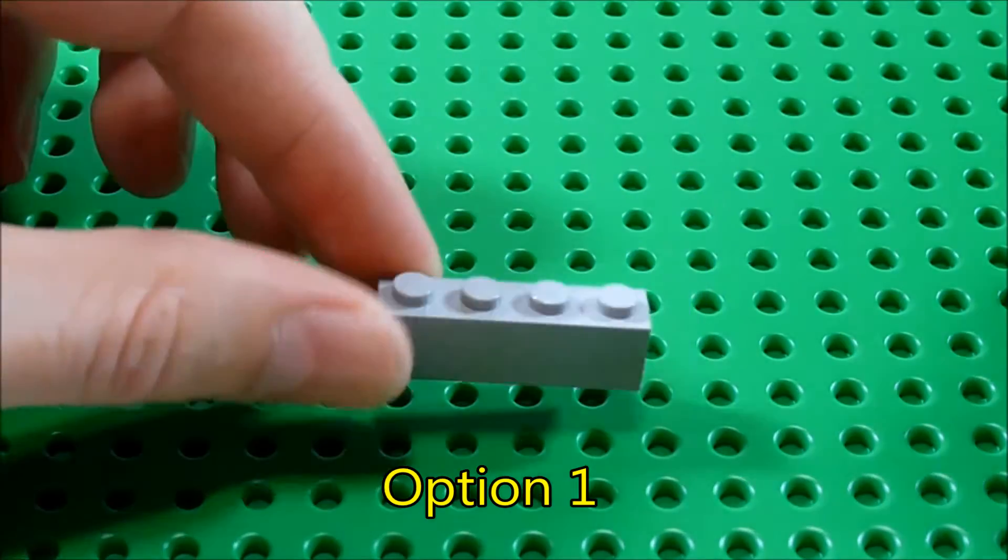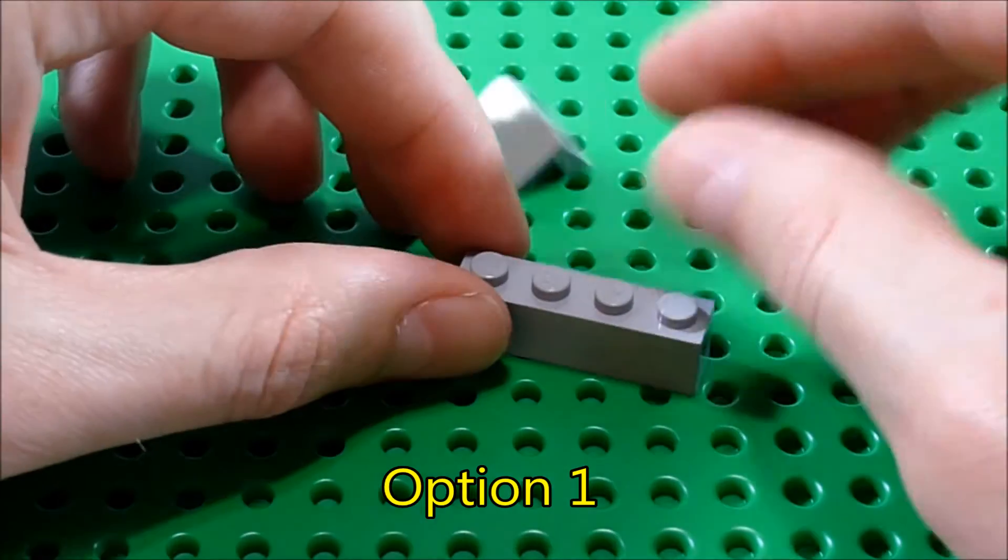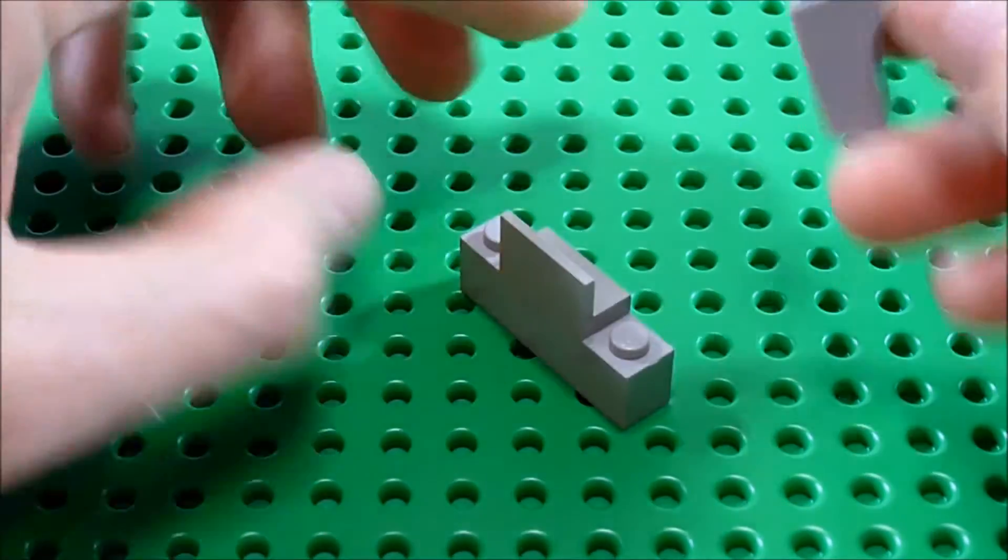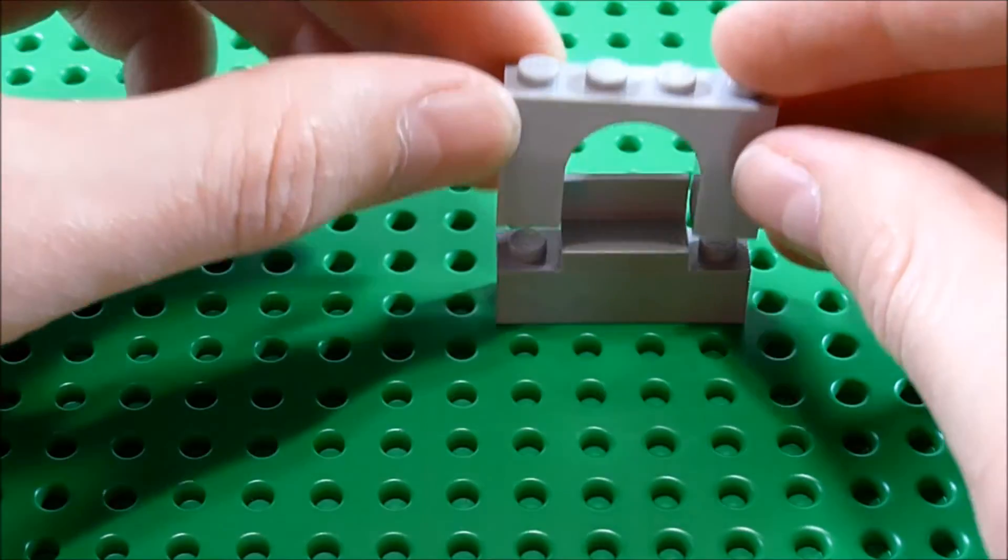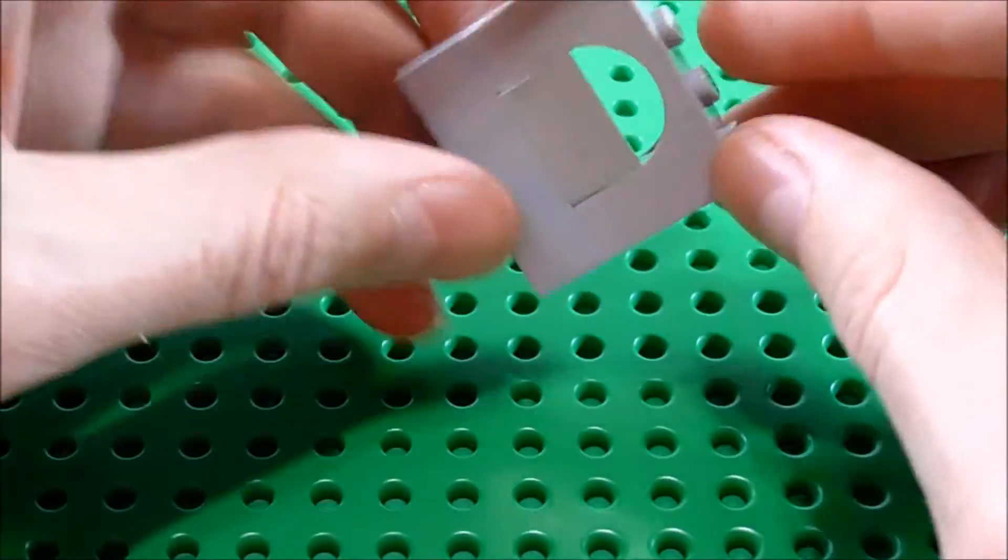Take the base or whatever you're building on, grab your panel piece and stick this in the center. Take the arch piece, stick it on like that.